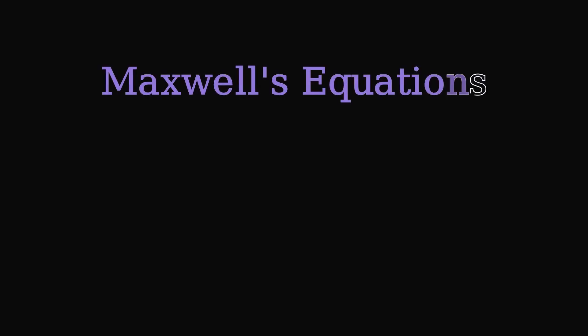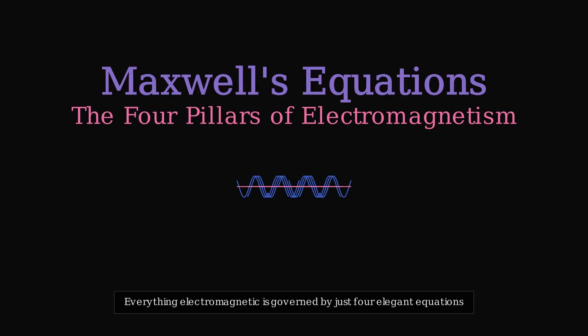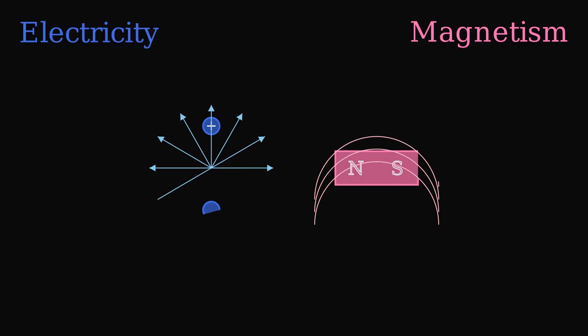Welcome to the story of four equations that govern everything electromagnetic in our universe. These are Maxwell's equations, the four pillars of electromagnetism. Everything electromagnetic is governed by just four elegant equations. Let's explore how they work together.